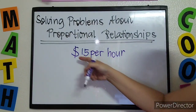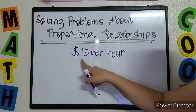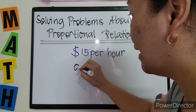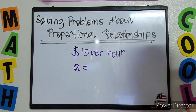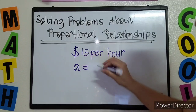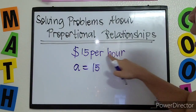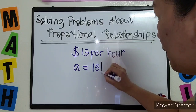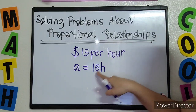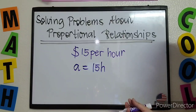To write the equation, what is the number? $15 is the amount. So therefore, you will have a equals 15 — that is the unit rate, 15 per hour, or 15 each. That is how simple it is to make an equation.